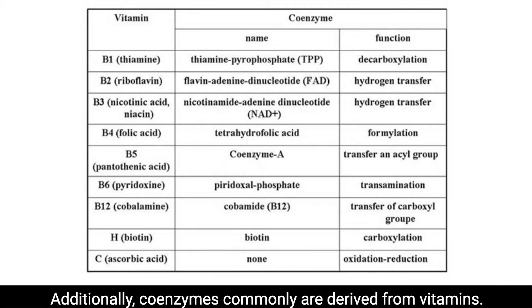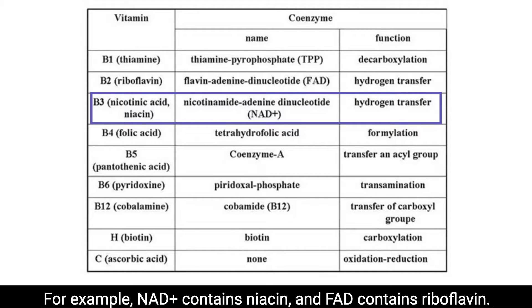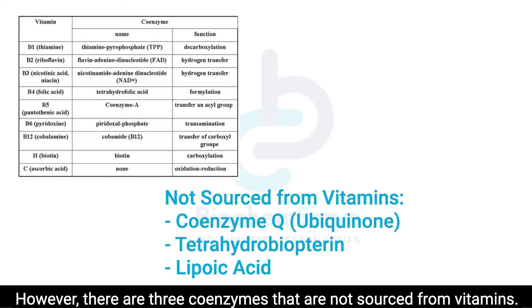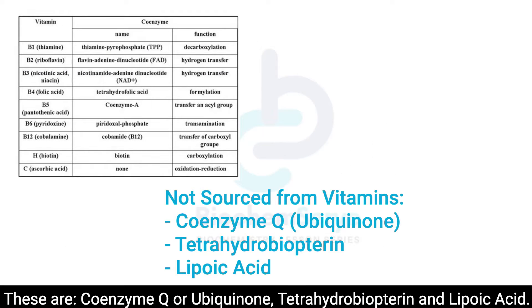Additionally, coenzymes commonly are derived from vitamins. For example, NAD+ contains niacin, and FAD contains riboflavin. However, there are three coenzymes that are not sourced from vitamins. These are coenzyme Q or ubiquinone, tetrahydrobiopterin, and lipoic acid.